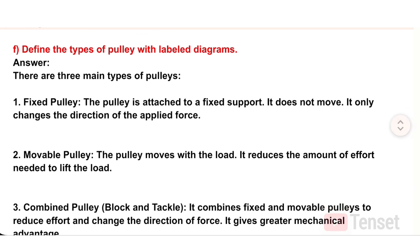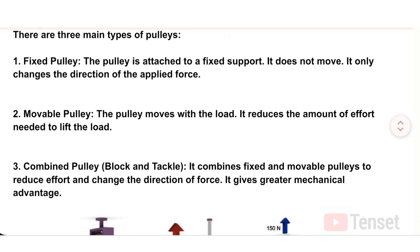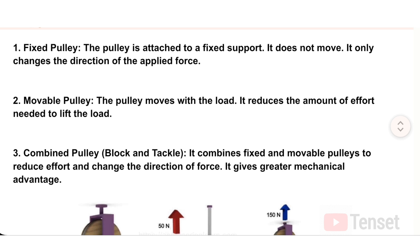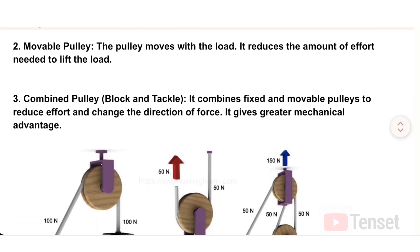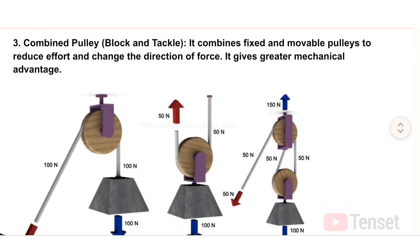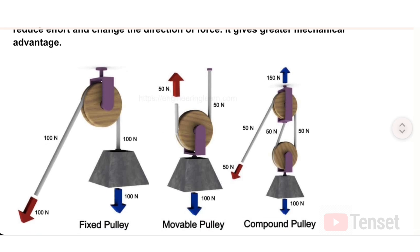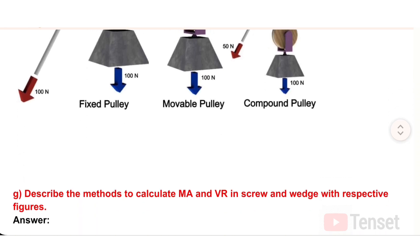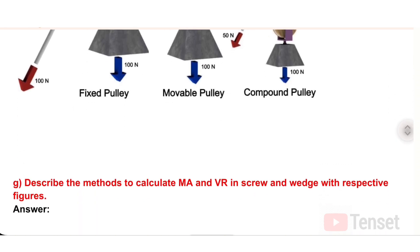F) Define the types of pulley with labeled diagrams. Answer: There are three main types of pulleys. One: Fixed pulley — attached to a fixed support, it does not move and only changes the direction of the applied force. Two: Movable pulley — moves with the load and reduces the effort needed to lift it. Three: Combined pulley (block and tackle) — combines fixed and movable pulleys to reduce effort and change direction of force, giving greater mechanical advantage.